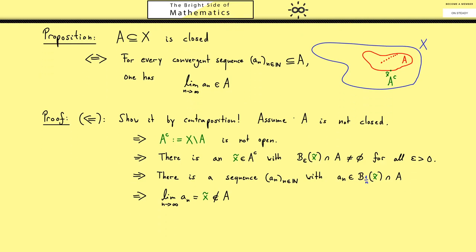So let's do the other direction then where I also want to use the contraposition. Here we now assume that there is a convergent sequence in A where the limit is not in A. And as before I want to call this limit just x tilde. So we have the same picture as here.